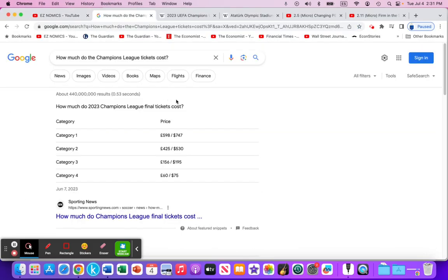When I looked at some of the price data for this match, we can see that there was four categories for attending the match. Category 4 was the cheapest at $75 per ticket. Category 3, $195 per ticket. Category 2, $530 per ticket. And then Category 1, $747 per ticket.